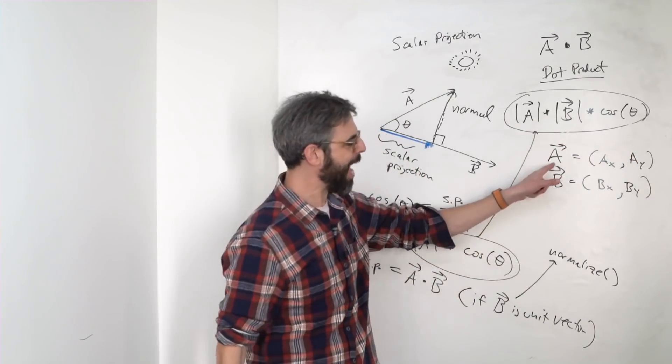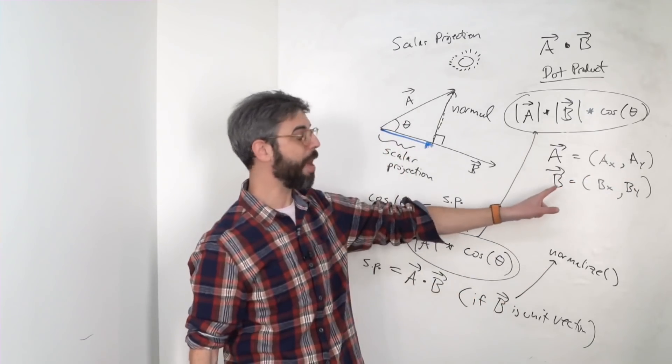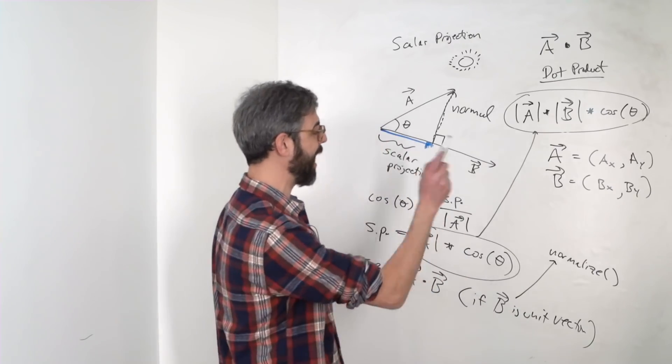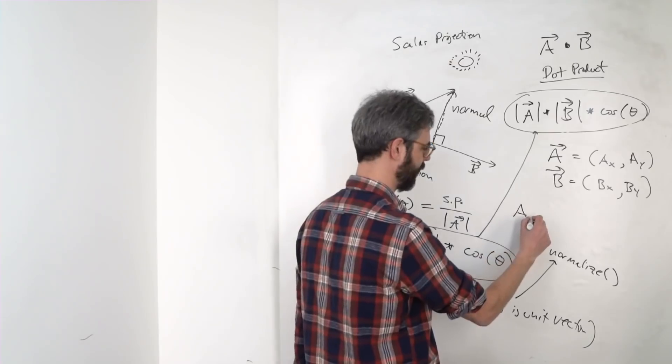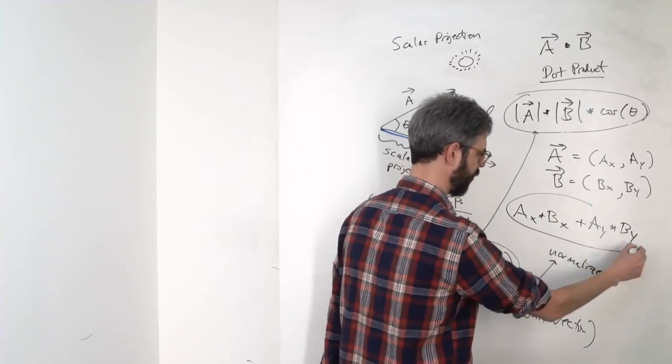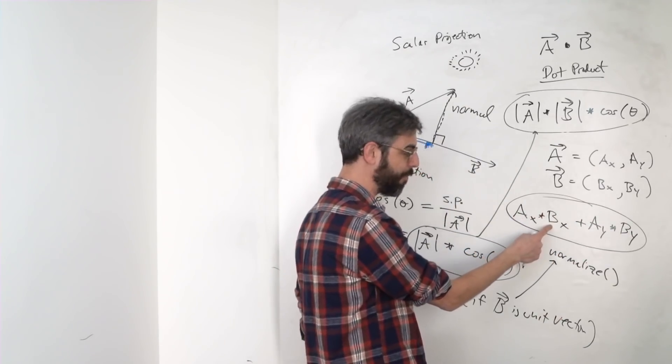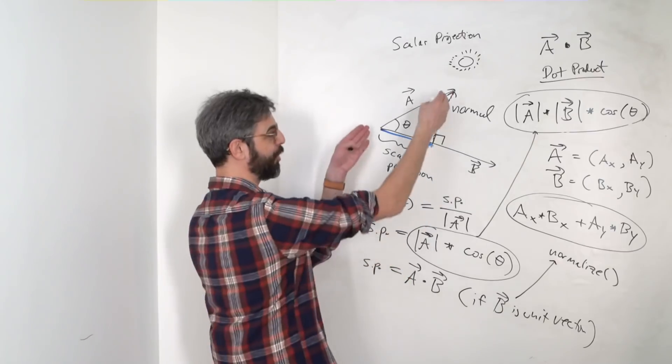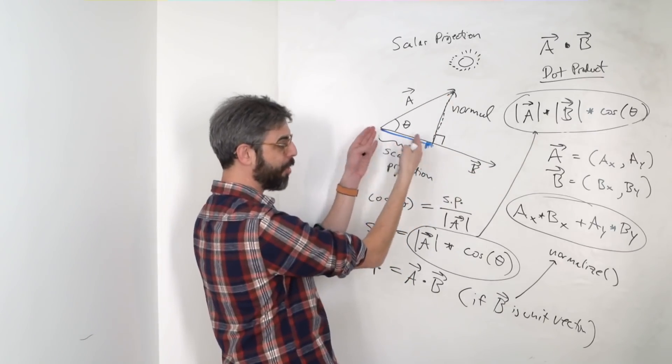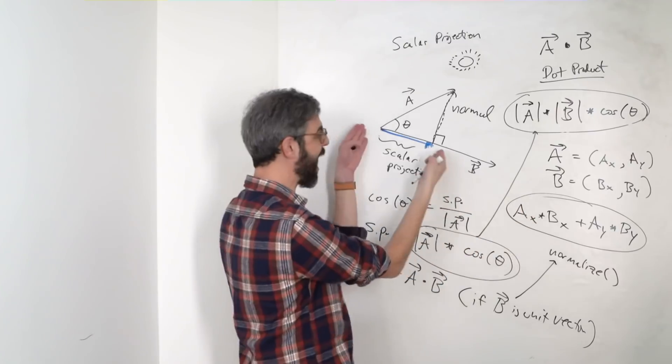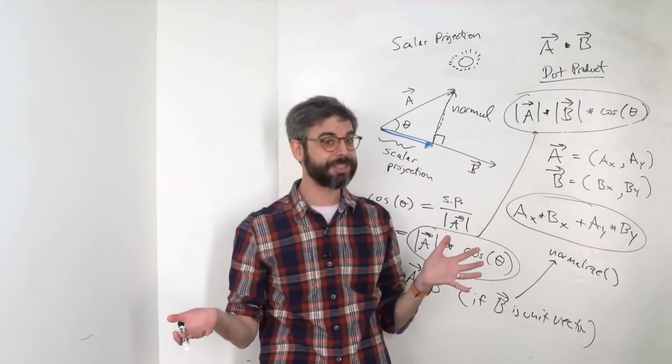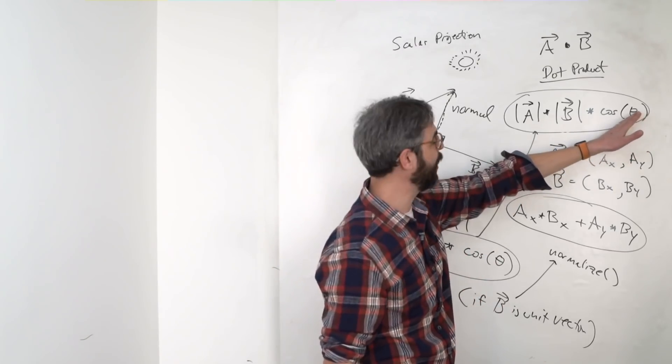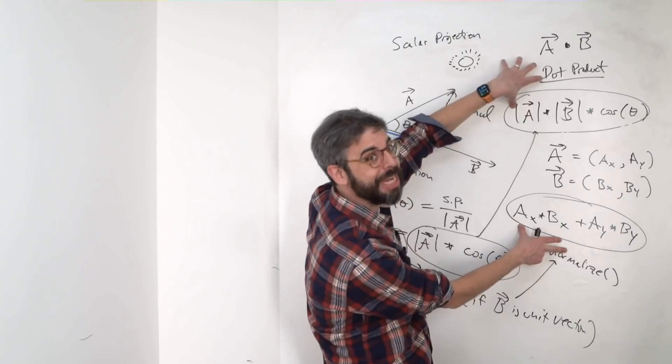Let me divide A and B into its components. I can represent vector A as A sub X, A sub Y. I can represent vector B as B sub X, B sub Y. The dot product of A dot B also equals the X component of A times the X component of B plus the Y component of A times the Y component of B. If I've started with these two vectors, I could just normalize B and then compute the dot product this way and I have the scalar projection. If you want an exercise, you could work out the math for how to calculate the angle between two vectors by knowing that these two equations are equal to each other.